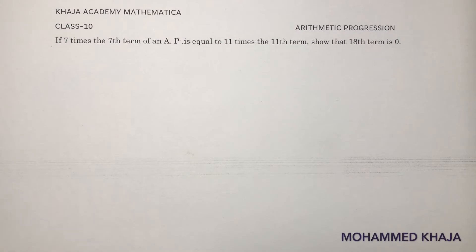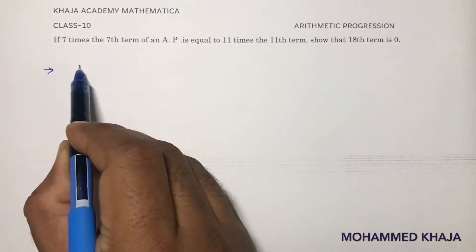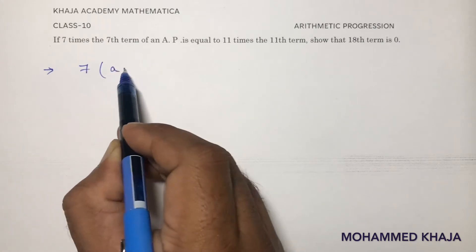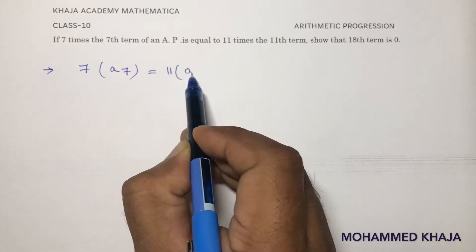If 7 times the 7th term of an AP is equal to 11 times the 11th term, show that the 18th term is 0. See, 7 times the 7th term of an AP is 11 times the 11th term.